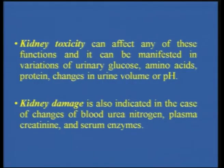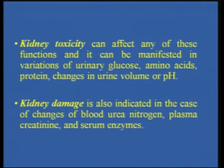Kidney toxicity and kidney damage can be identified when you go for your master checkup — the doctor will check serum creatinine, urea, and other blood levels. Any alteration in these levels can clearly indicate kidney toxicity or damage to one or both kidneys. Kidney toxicity can affect these functions and be manifested in variations of urinary glucose, amino acids, proteins, changes in urine volume, and pH. Kidney damage will be indicated by changes in blood urea nitrogen, plasma creatinine, and serum enzymes.